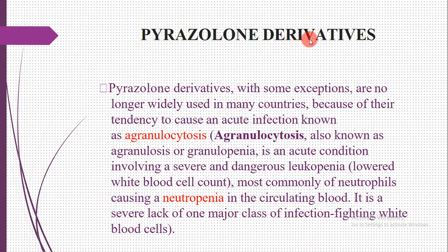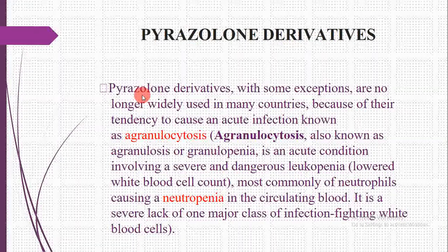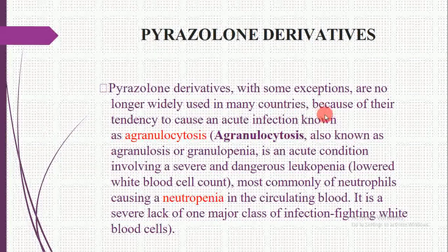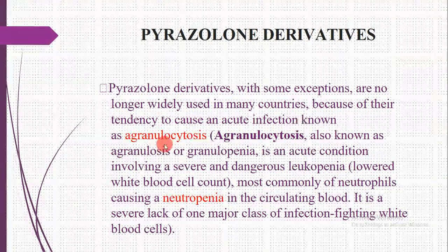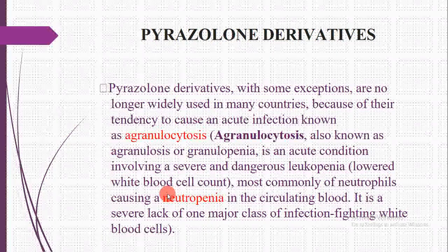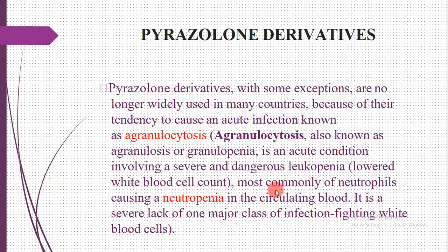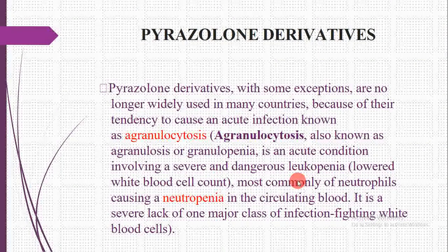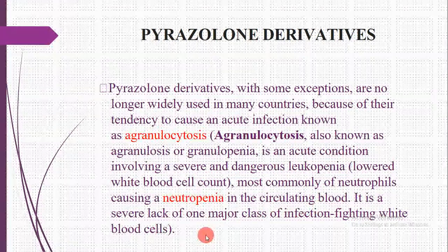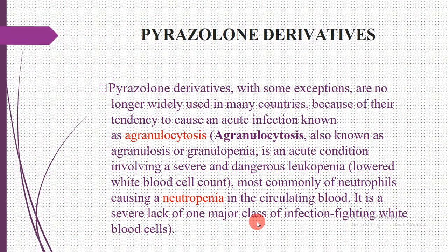Pyrazolone derivatives, with some exceptions, are no longer widely used in many countries because of their tendency to cause an acute condition known as agranulocytosis — also called agranulopenia or granulopenia — which is a severe and dangerous leukopenia. This occurs when the white blood cell count becomes very low, most commonly affecting neutrophils and causing neutropenia, representing a severe lack of infection-fighting white blood cells.